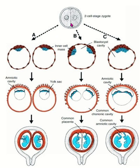If these two cells separate in the early part of development, they create two blastocyst cavities, two bilaminar germ discs, two amniotic cavities, two yolk sac cavities, and two separate chorionic cavities. So two placentas are developed, with two separate amniotic cavities and two separate chorionic cavities.